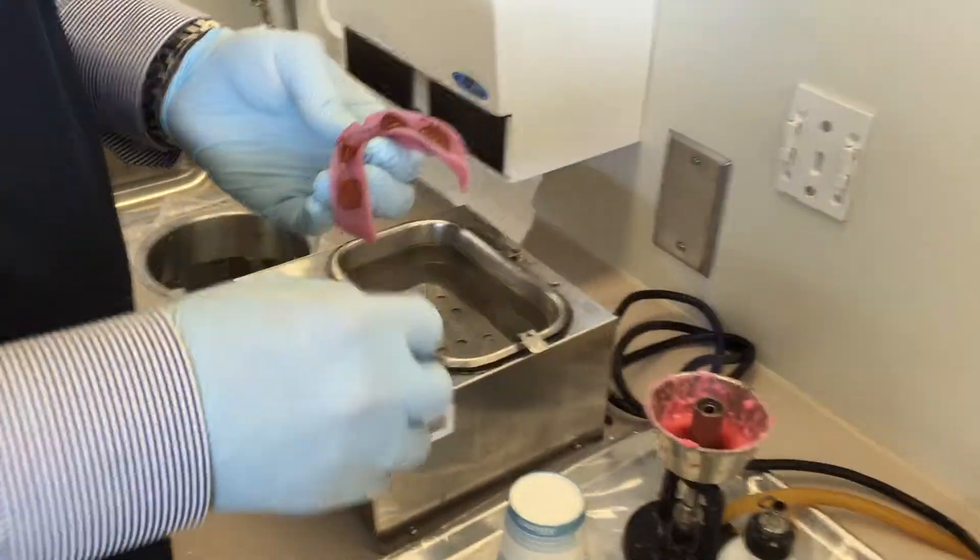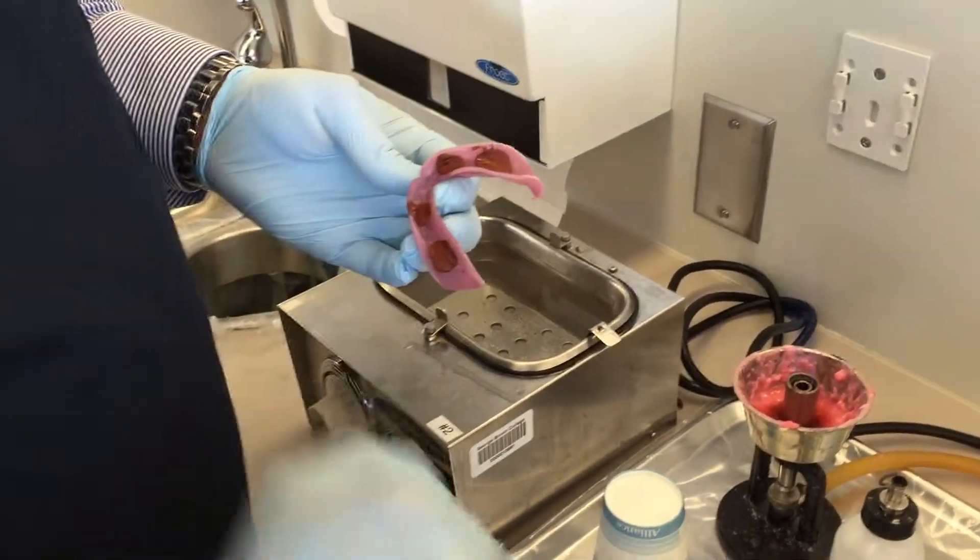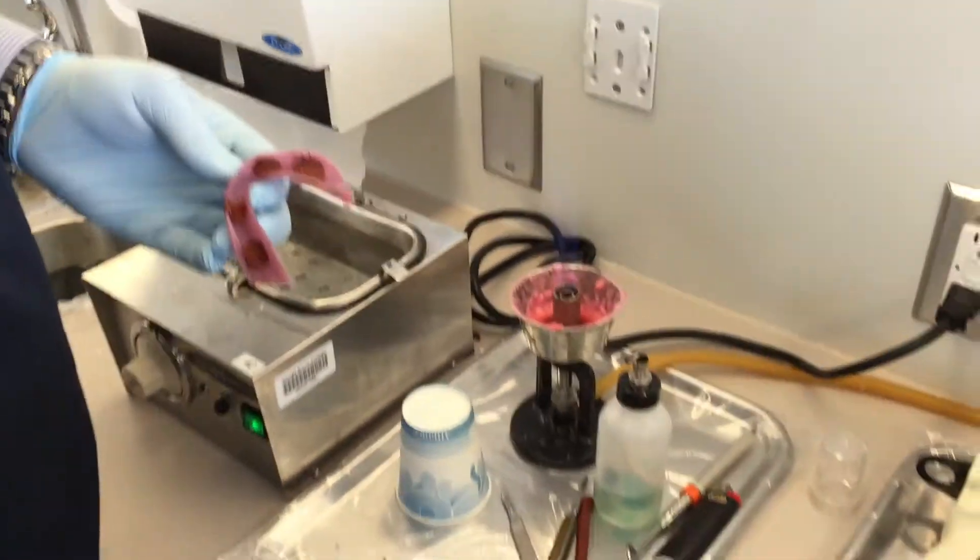Okay, so the next step of the border molding procedure for the lower, I'm going to use the heavy body PVS material.